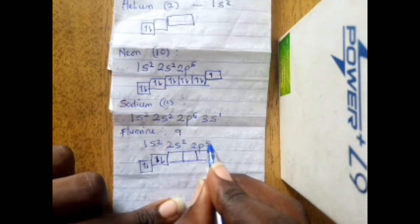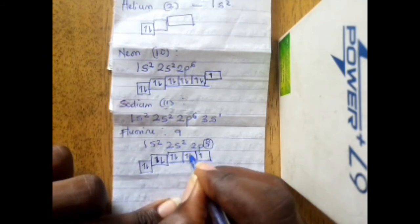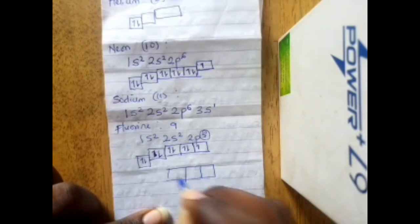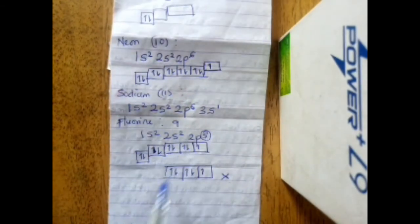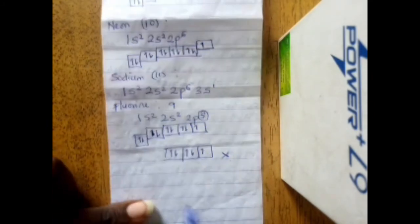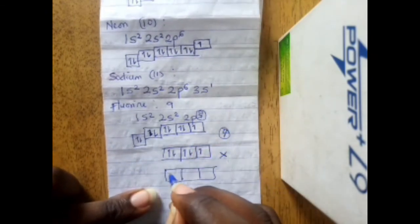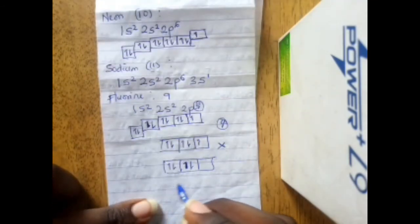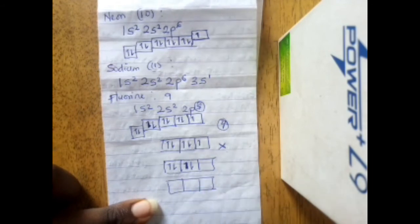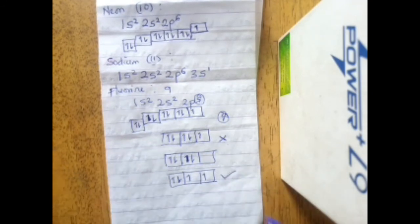For the 2p⁵ configuration of fluorine: you place one electron in each of the three p orbitals first (three singly-filled orbitals), then come back to pair — giving two paired electrons and one unpaired. The correct representation is three orbitals with one, one, one first, then pair to get two, one, one — not filling them all paired sequentially.